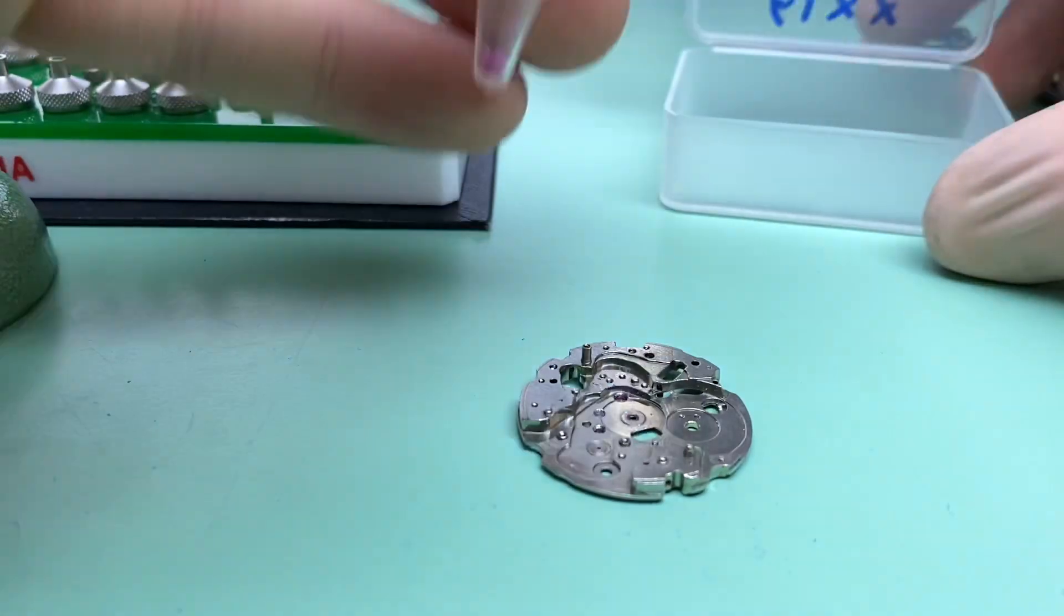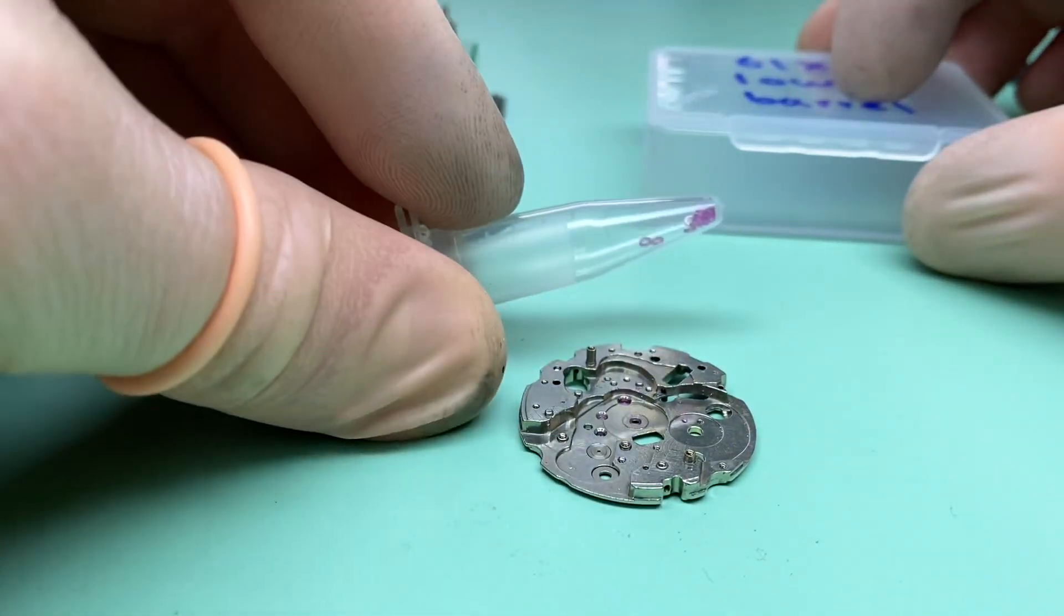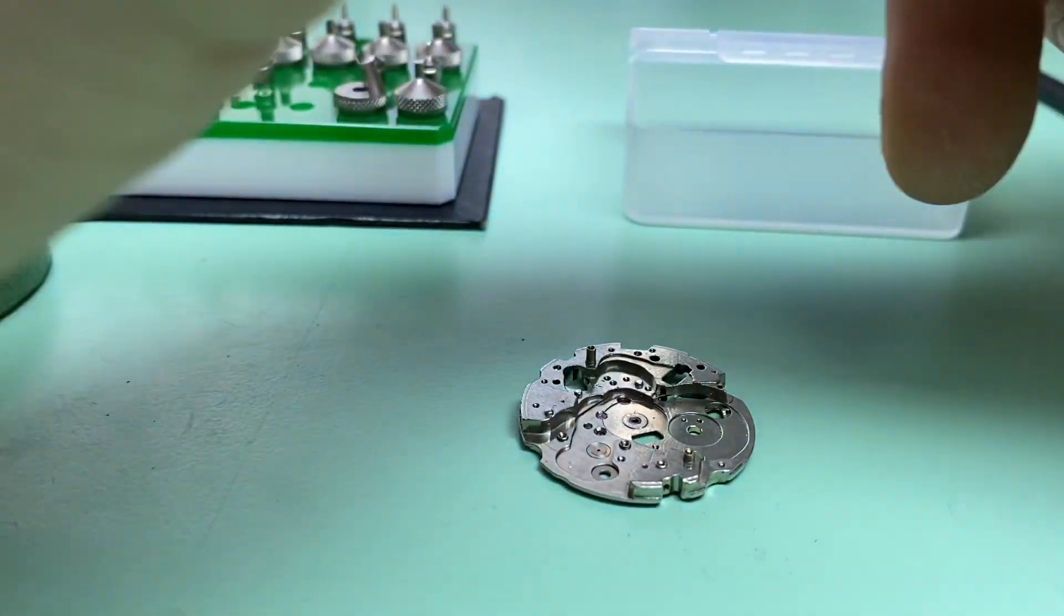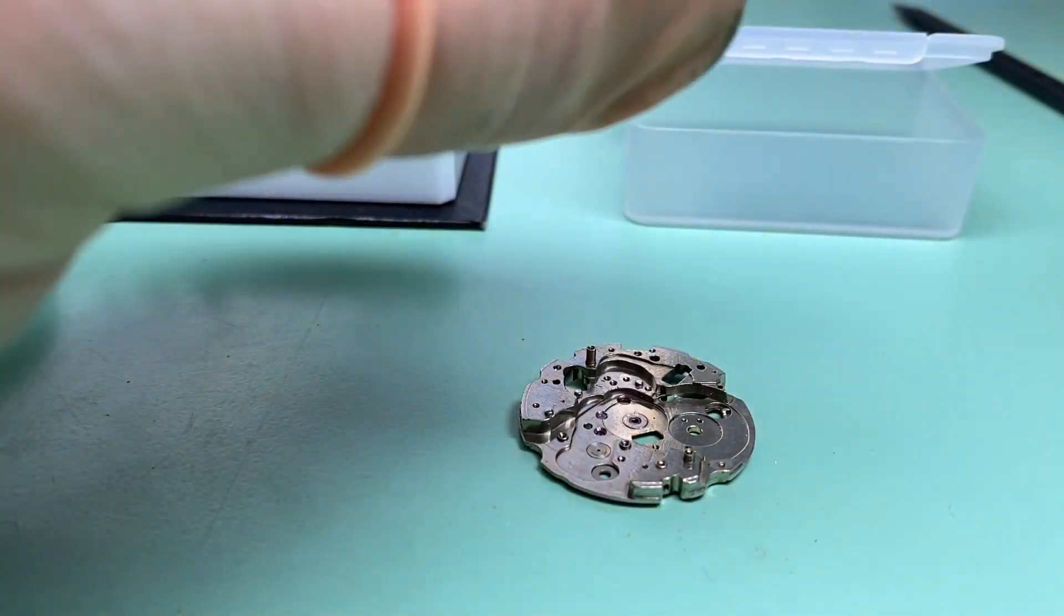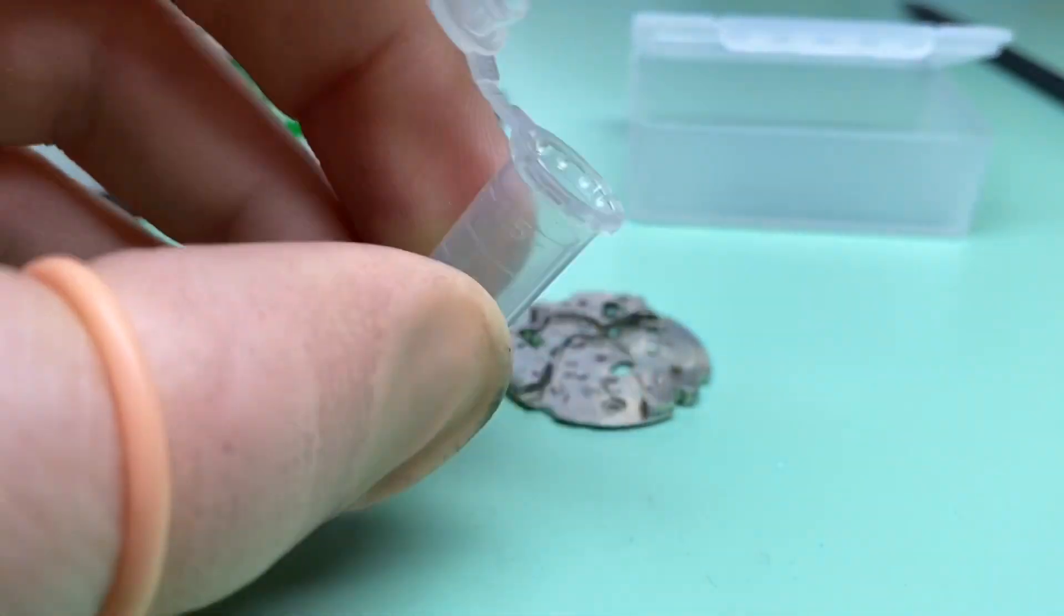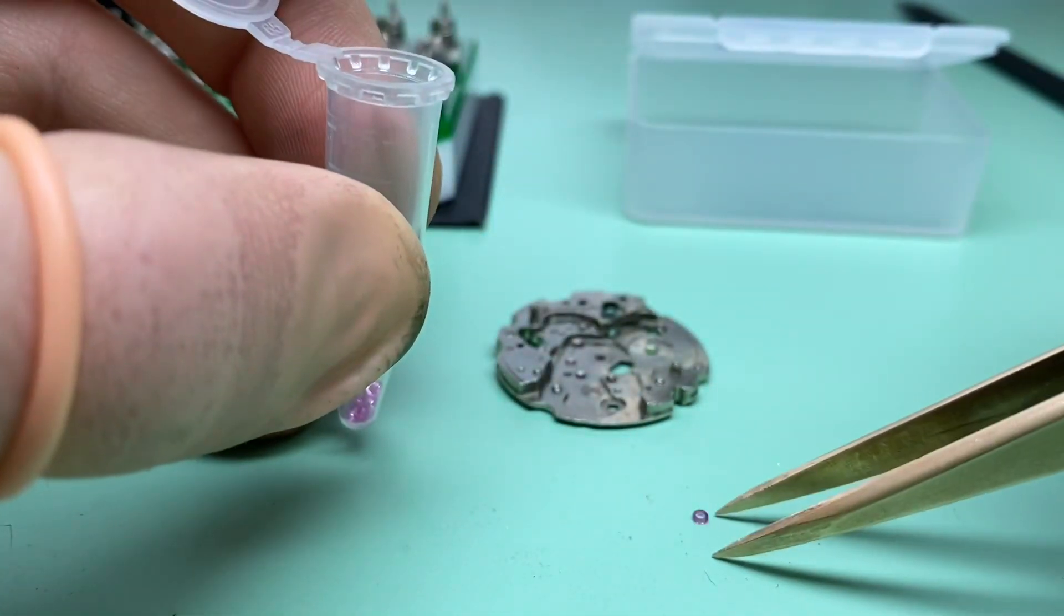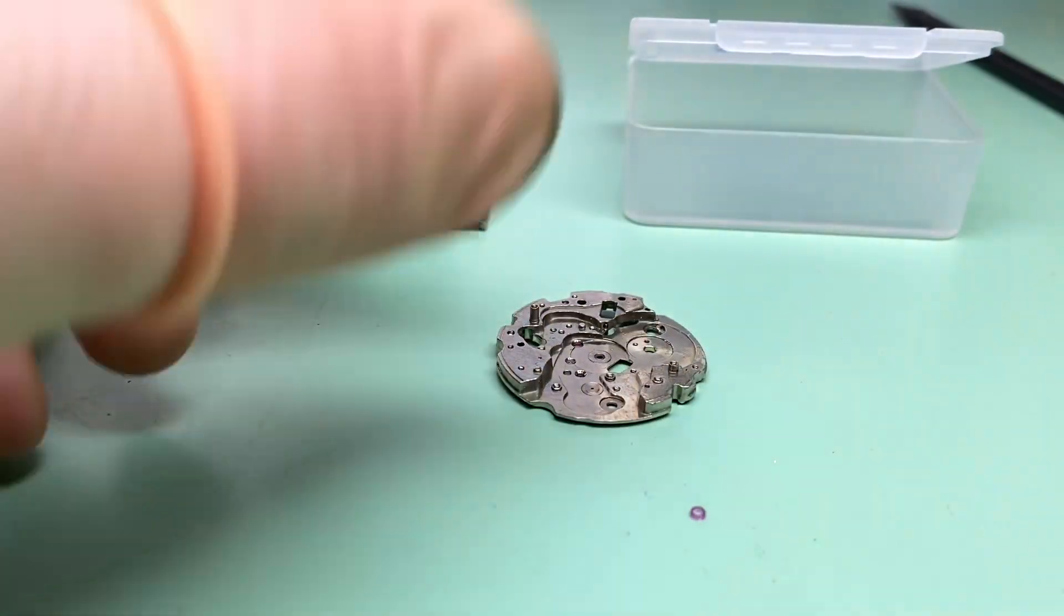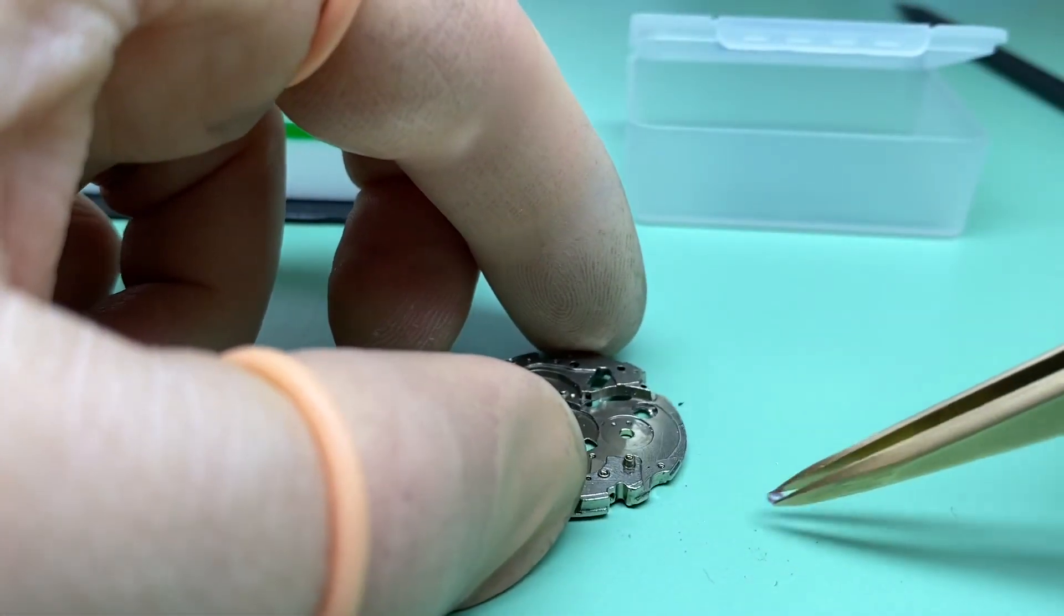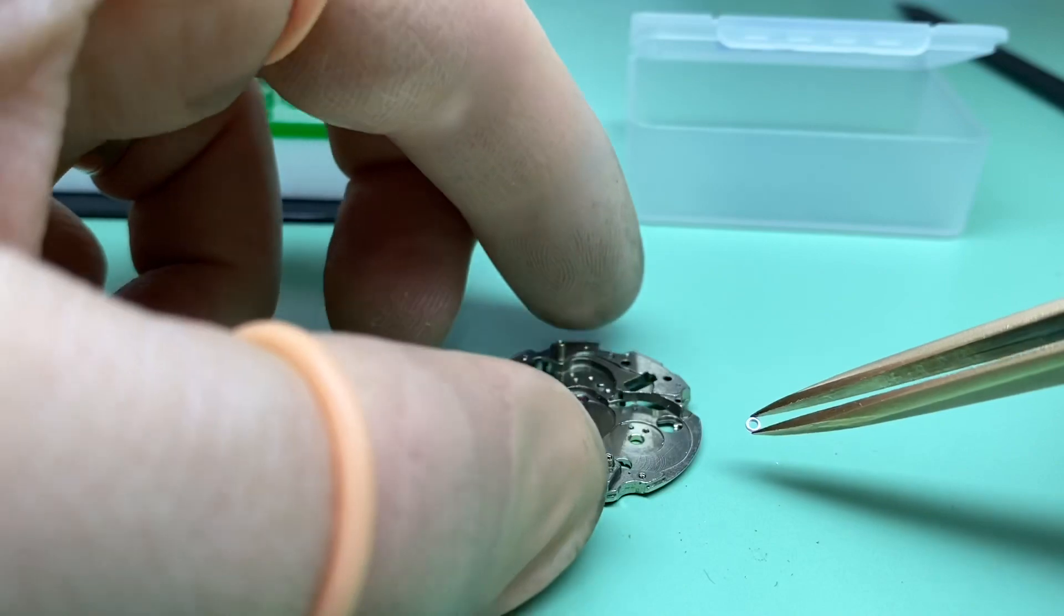Now we're ready to fit the lower jewel. I have my stock of 6139 lower jewels which are made specifically for this purpose and we can get one out. These jewels are made perfectly to fit for the 6139 movement.